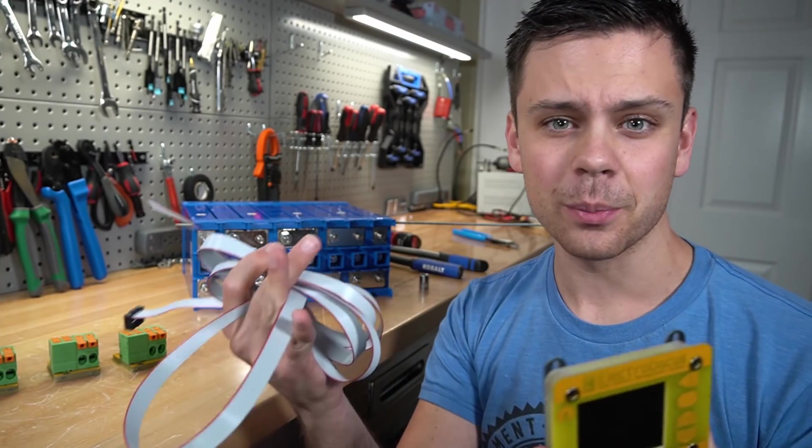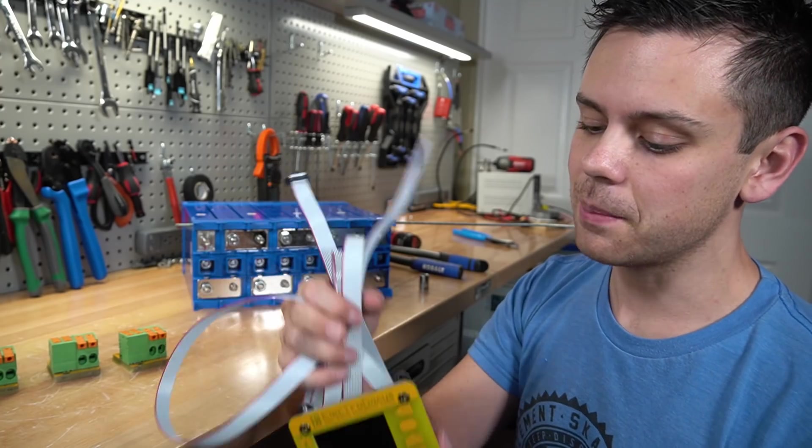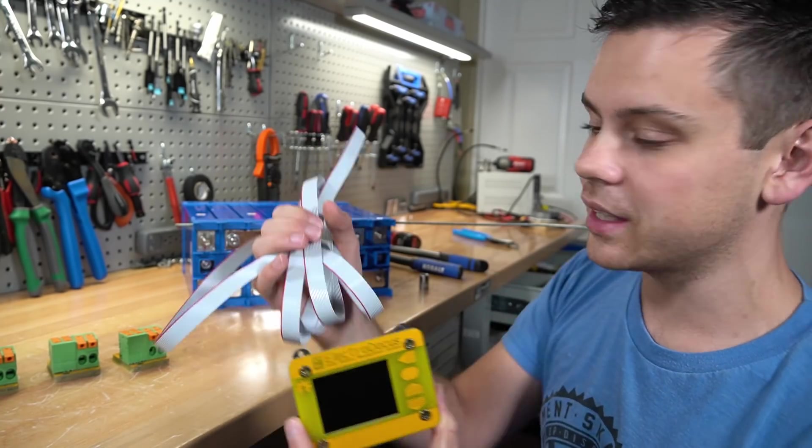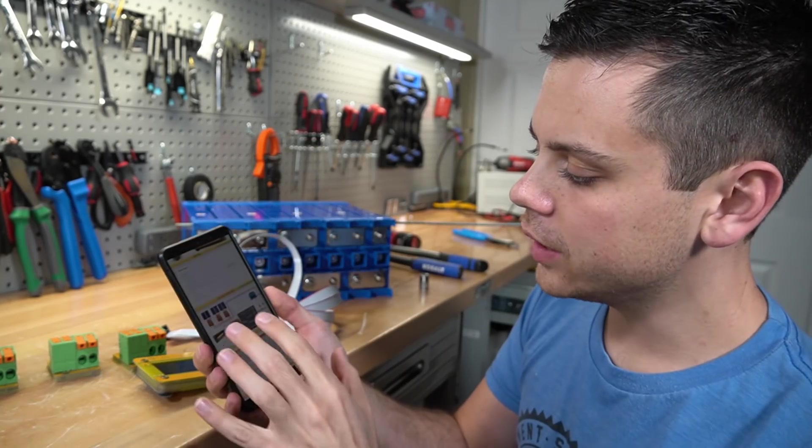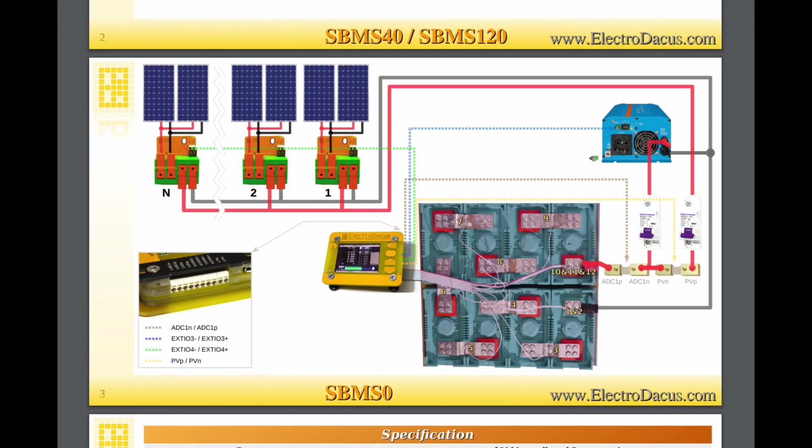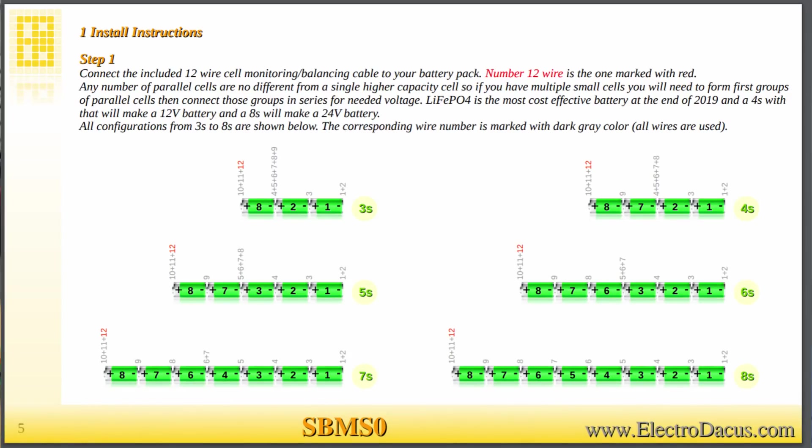Now let's actually build it. Step number one of the manual says to connect the main unit to the cells with this balance cable. And in the manual, it shows a complete system overview with circuit breakers, shunts, the balance leads, and everything else you need to know. I want you guys to look over this first and then scroll down to step one, and you will see the cell configurations. And we have an 8s, so we're going to choose this one.